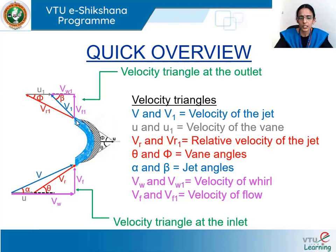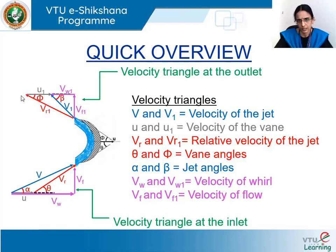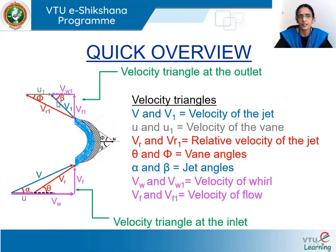At the outlet, the velocity triangle is drawn by considering the relative velocity and the absolute velocity of the vane. Drawing the relative velocity at outlet and the absolute velocity of the vane, the closing side of the triangle gives the absolute velocity of the jet v1 at the outlet. Since the jet is tangential to the vane at outlet, vr1 makes an angle φ with the direction of motion of the vane, where φ is the vane angle at the outlet. The angle that the absolute velocity makes with the direction of motion of the vane at outlet is the jet angle at outlet, β. The absolute velocity v1 can be resolved into velocity of whirl at outlet and velocity of flow at outlet.